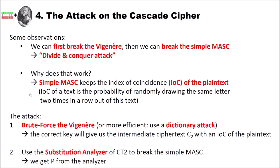The IOC is a statistical value that helps us break ciphers and detect plaintext or transposed plaintext. The IOC of a text is the probability of randomly drawing the same letter twice in a row from that text. You have a text — encrypted or not — you randomly choose a letter, say N, and then randomly choose another letter; the probability that the second letter is also N is the IOC. The IOC differs slightly per language, but it is very different when comparing plaintext and ciphertext.